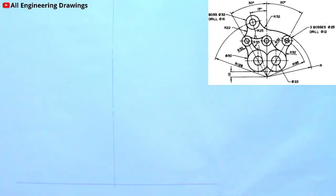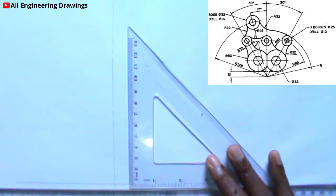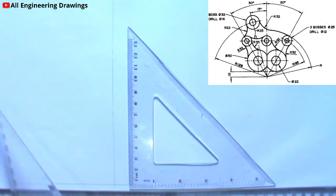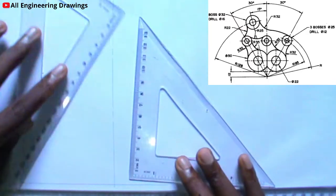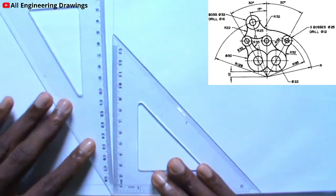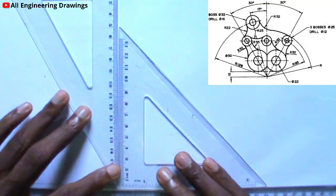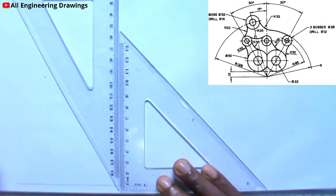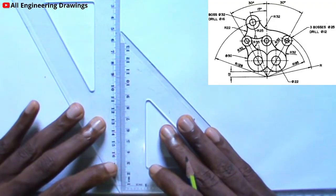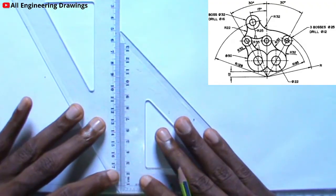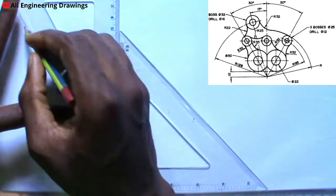After drawing the vertical line, you have to draw lines inclined to the vertical at 30 degrees. You can do so using your set squares. You have to place your set squares this way and support them with your T-square. Then you have to draw the lines.